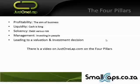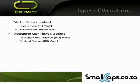There's a video on JustOneLap.com on the four pillars. There's also a webinar on the cost of equity and WACC — I'd recommend going back and refreshing yourselves on that. Types of valuations: you get relative valuations — price to earnings, price to book — these are based on moving targets, other traded shares, which can sometimes be wrong. This is why we also use absolute valuations, including the dividend discount model and now the discounted free cash flow, or DCF model.